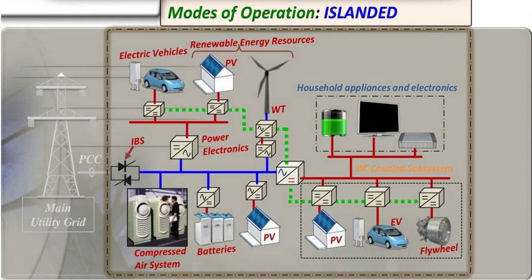Grid Connected and Islanding Operations are concepts related to electrical power systems and the operation of distributed energy resources like solar panels, wind turbines, and energy storage systems. Let's explore each term separately.